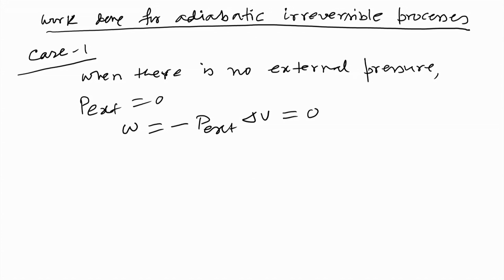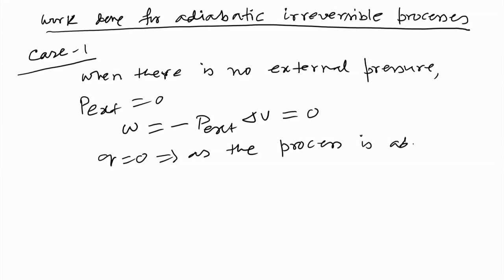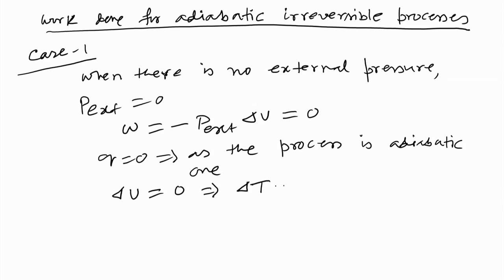Since work done is zero and the process is adiabatic, q is also zero. From the first law of thermodynamics, delta-U equals zero. Therefore, there is no temperature change, because internal energy for an ideal gas depends on temperature.